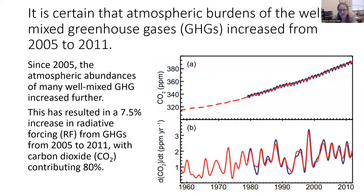From those records, we can see that it's absolutely certain that since 2005, the atmospheric abundances of these greenhouse gases has increased. This has resulted in a 7.5% increase in radiative forcing between 2005 and 2011, with carbon dioxide contributing 80%. That's why we talk about carbon dioxide as the greenhouse gas the most — because it's contributing the most to the radiative forcing.